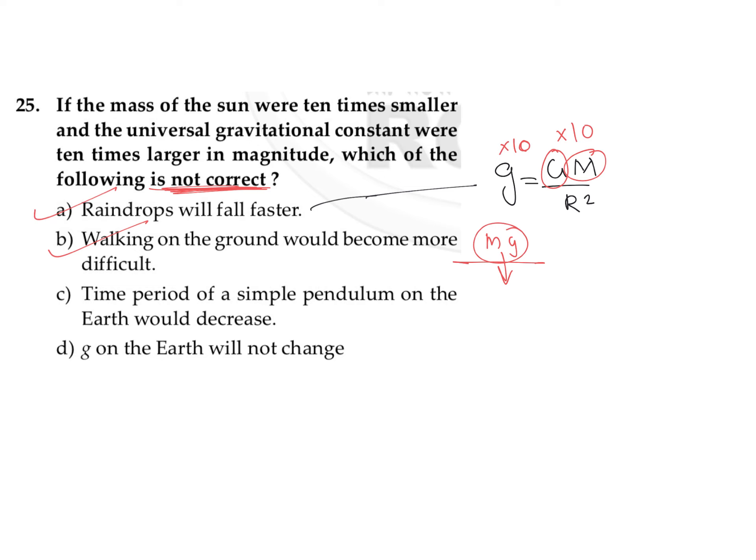Time period of simple pendulum on earth would decrease. We know the equation for time period is 2π√(l/g). As the value of g increases, time period will decrease. So we can say that this third option is also correct.